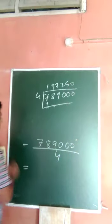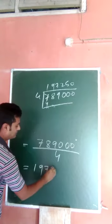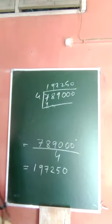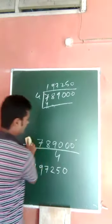So 2, 20, and zero. Okay, that means 197250. Okay, division or any calculation, do yourself.